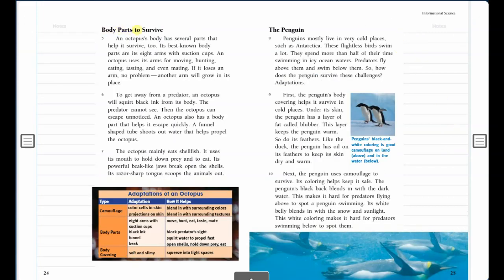Body parts to survive. An octopus's body has several parts that help it survive, too. Its best-known body parts are its eight arms with suction cups. An octopus uses its arms for moving, hunting, eating, tasting, and even mating. If it loses an arm, no problem. Another arm will grow in its place.